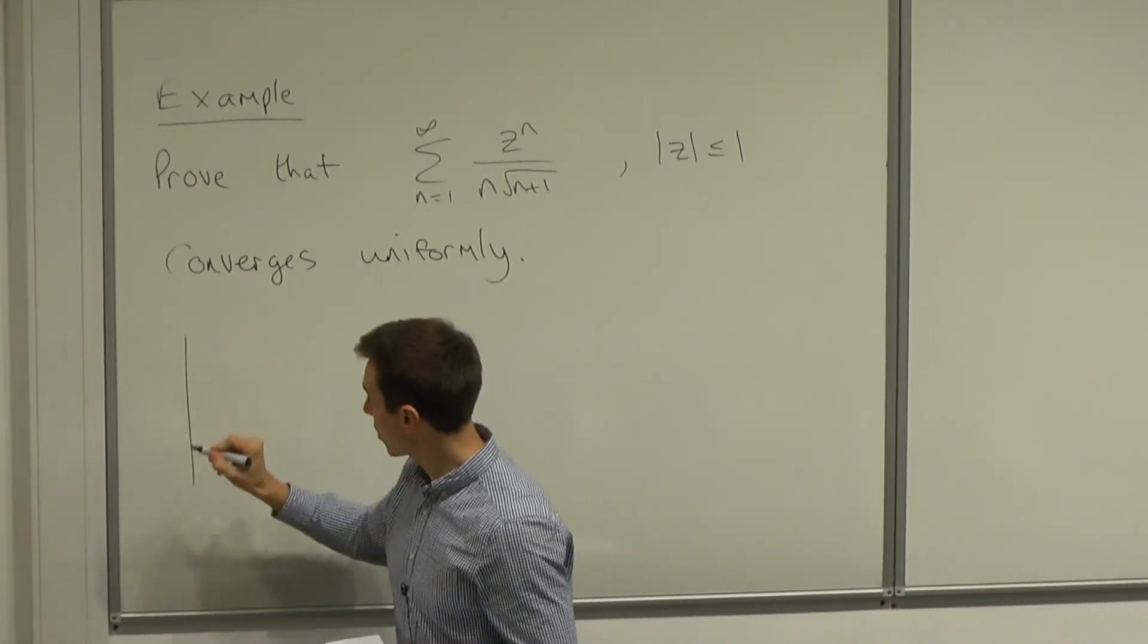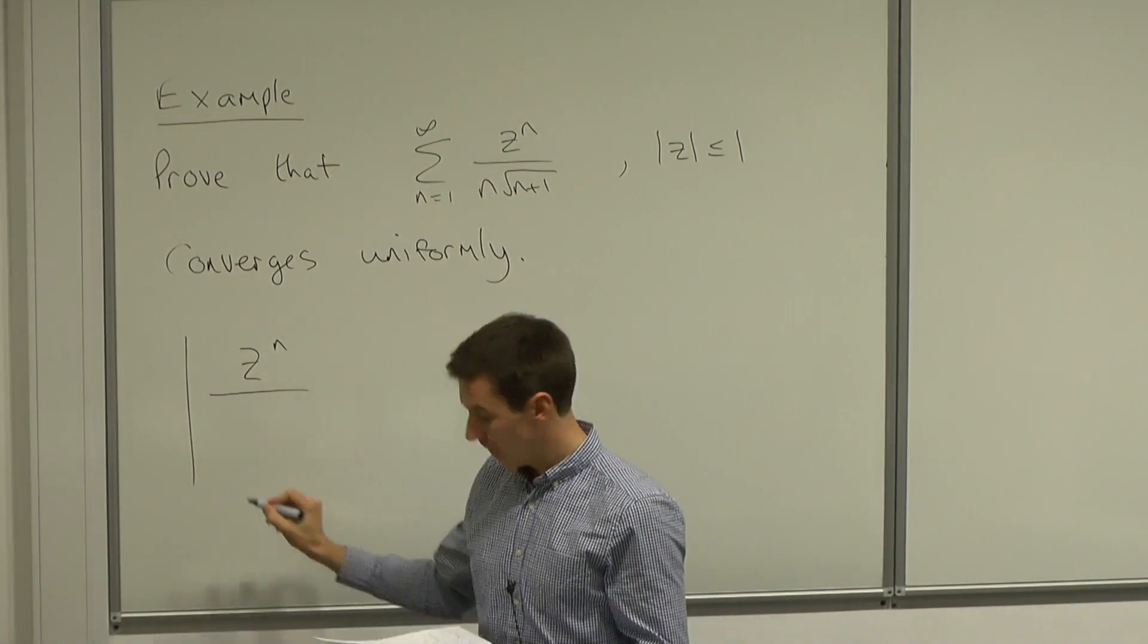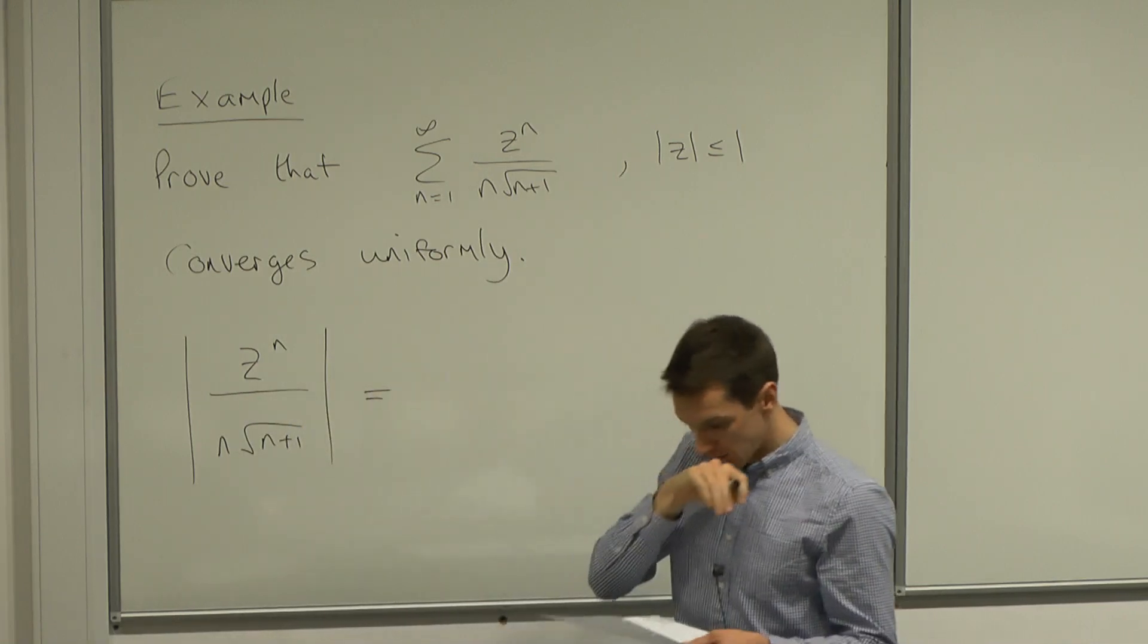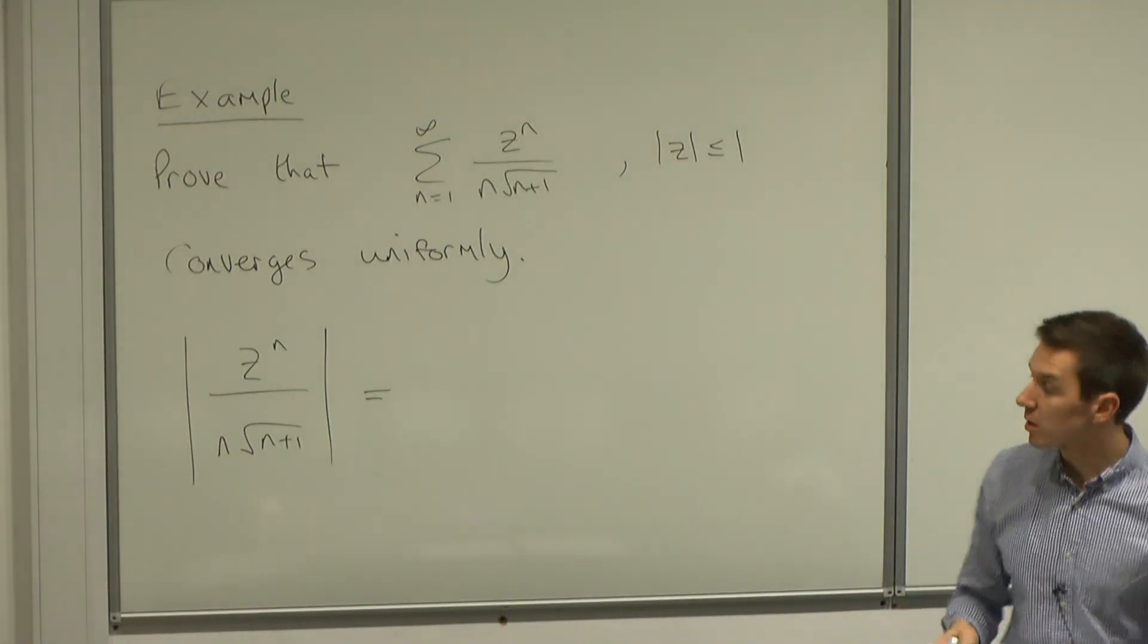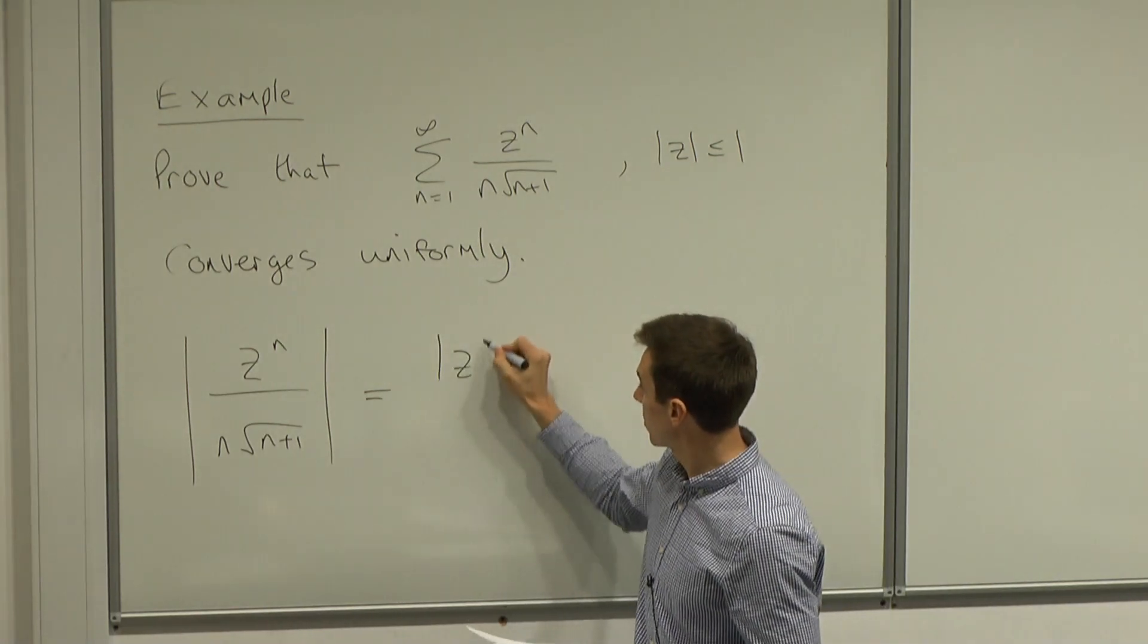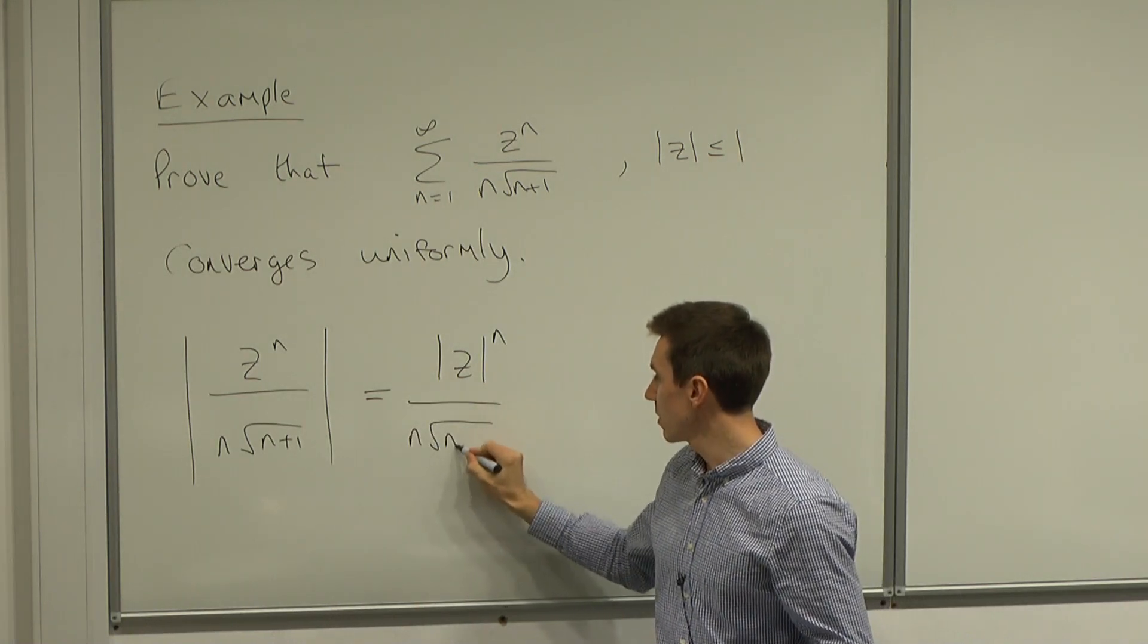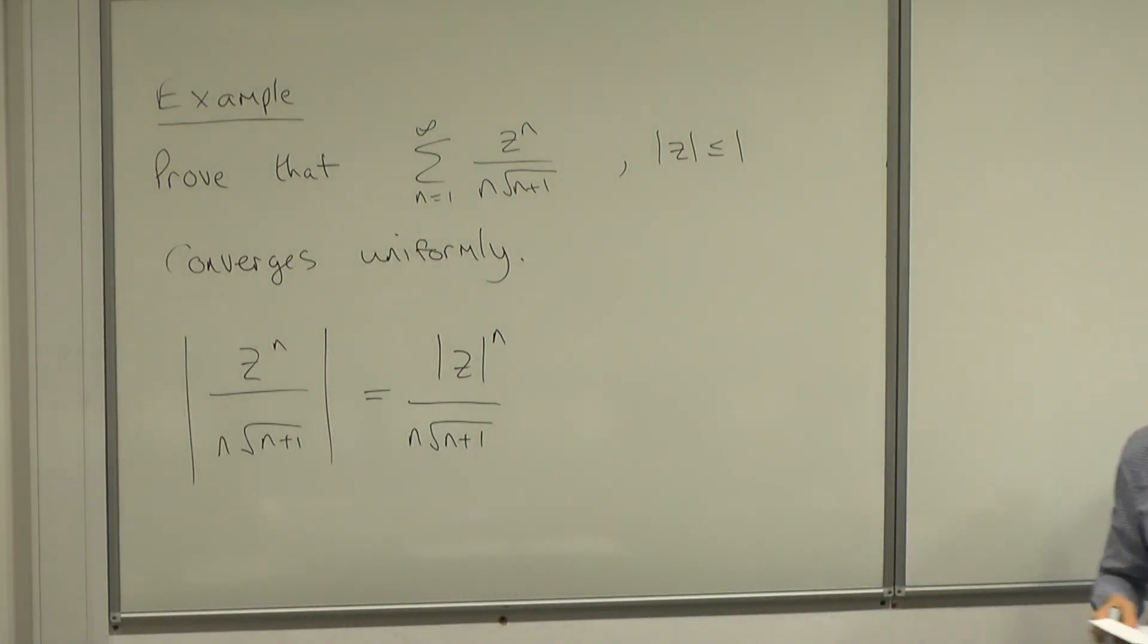So let's look then at the modulus of z to the n over n into square root of n plus 1. The first step is to simplify if we can, and then to estimate. So this is equal to the modulus of z to the power of n over n into square root of n plus 1, because we know that n is greater than 0.